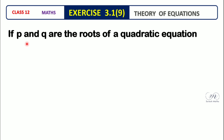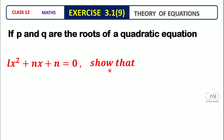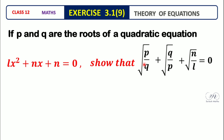Question number 9. If P and Q are the roots of a quadratic equation Lx² + nx + n = 0, show that root of P by Q plus root of Q by P plus root of n by L is equal to 0.